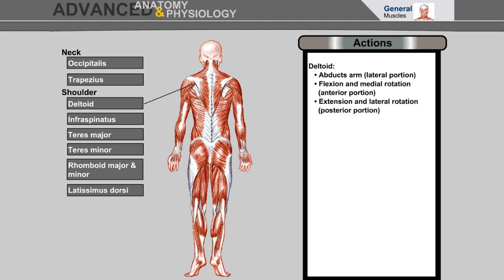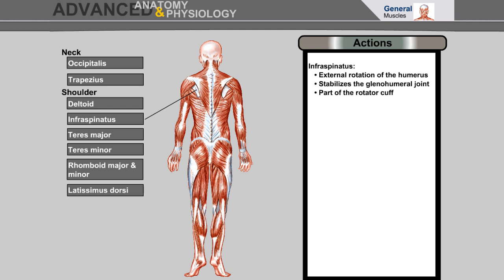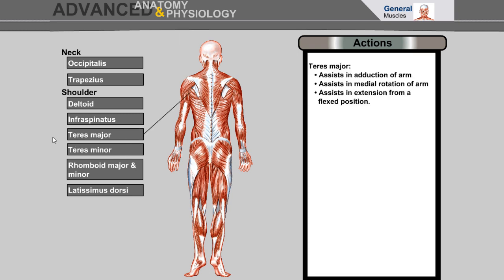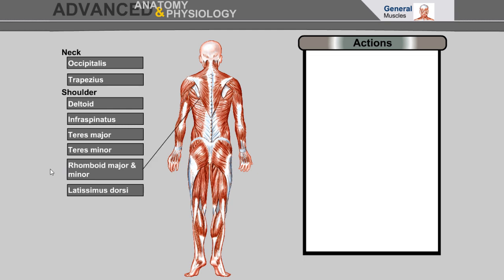Deltoid abducts the arm, flexion and medial rotation, extension and lateral rotation. Infraspinatus: external rotation of the humerus, stabilizes the glenohumeral joint, and is part of the rotator cuff. Teres major assists in adduction of the arm, medial rotation of the arm, and extension from a flexed position. Teres minor laterally rotates the arm, assists in adduction of the arm, stabilizes the glenohumeral joint, and is part of the rotator cuff.